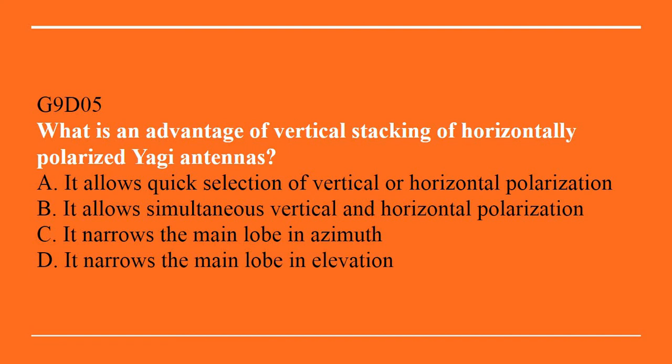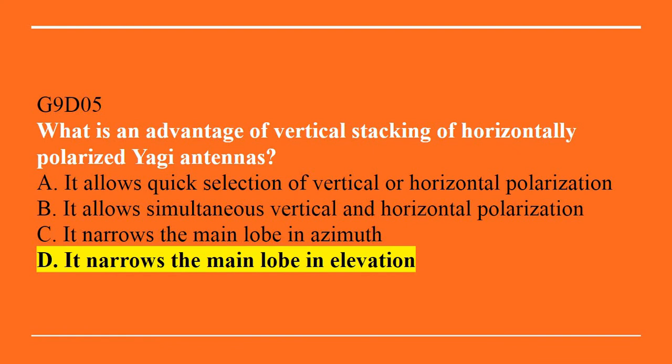G9D05: What is an advantage of vertical stacking of horizontally polarized Yagi antennas? A. It allows quick selection of vertical or horizontal polarization. B. It allows simultaneous vertical and horizontal polarization. C. It narrows the main lobe in azimuth. Or D. It narrows the main lobe in elevation. The answer is D, it narrows the main lobe in elevation.